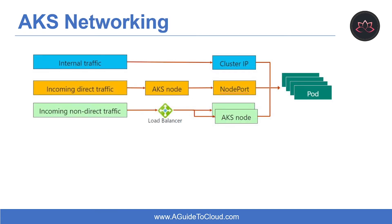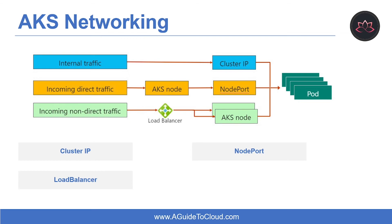Let's look at how AKS networking works. To simplify the network configuration for application workloads, Kubernetes uses services to logically group a set of pods together and provide network connectivity. It includes Cluster IP, which creates an internal IP address for use within the AKS cluster — good for internal-only applications. Then we have NodePort, which creates a port mapping on the underlying node allowing the application to be accessed directly with the node IP address and port. Then we have LoadBalancer, which creates an Azure LoadBalancer resource, configures an external IP address, and connects the requested ports to the LoadBalancer backend pool. The last one is ExternalName, which creates a specific DNS entry for easier application access.